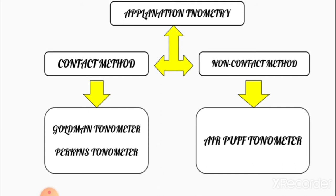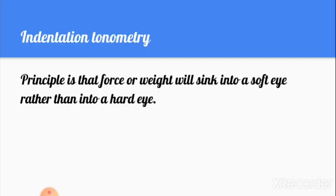In the non-contact method, there is the air puff tonometer. Its principle is based on how much indentation the air makes on the cornea, and the time taken for that indentation is calculated to measure intraocular pressure. This is the air puff tonometer, also known as the non-contact tonometer.